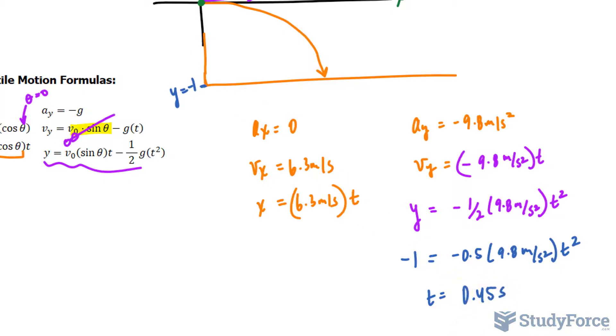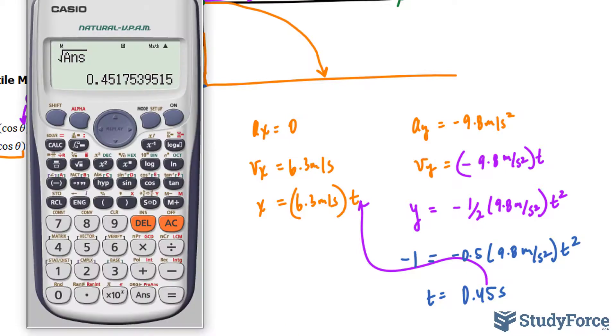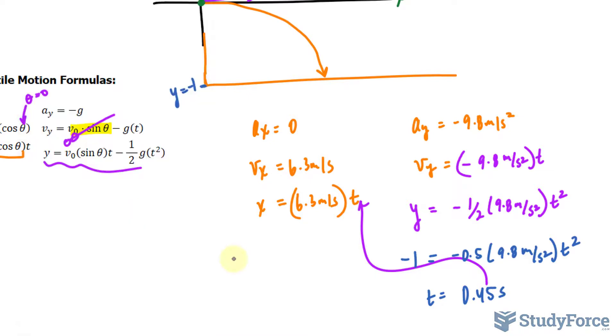Now, taking this value and putting it in for t here, we can find the distance. So 6.3 times the value on our screen gives us 2.84 meters. I'll round to 2.8. 2.8 meters to the right from where that water initially escapes.